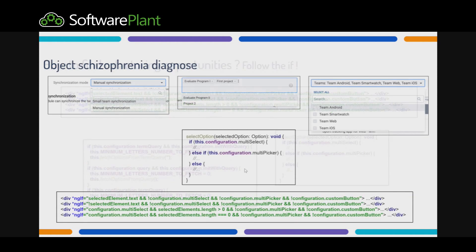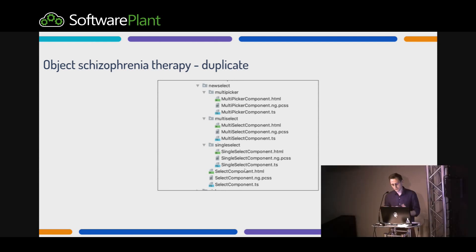I want to mention two code smells. The first is object schizophrenia — our object thinks it is one of three different objects. For example, I have a select component that has three flavors: single select, multi picker, and multi select. How can you find it in code? You see the same if in the HTML and in the TypeScript. It's the same class, but working as three different classes. It's really easy to diagnose.